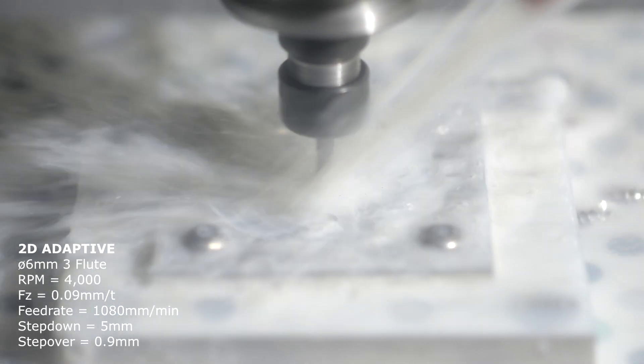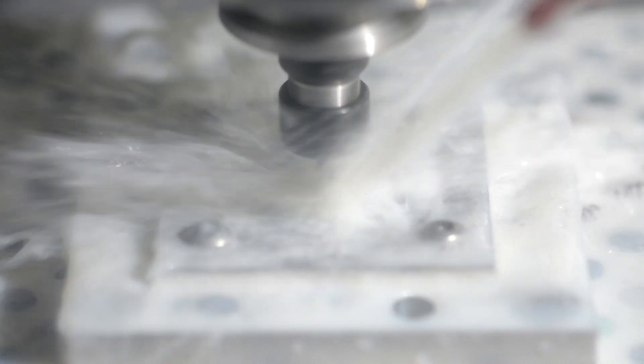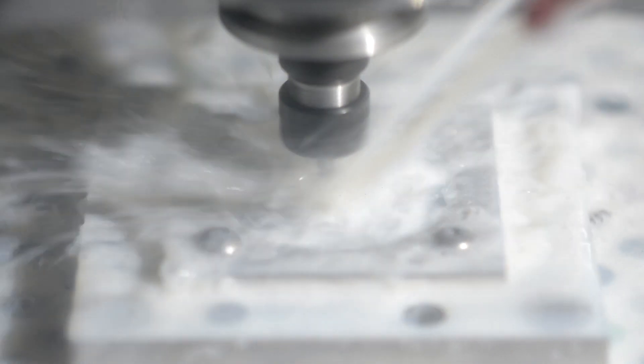Then I'm going to come in with a six millimeter end mill and rough out the main bore, do a semi-finished contour, check the bore diameter with a probe and a telescopic bore gauge, and adjust the tool compensation if needed and then do the final finishing pass.